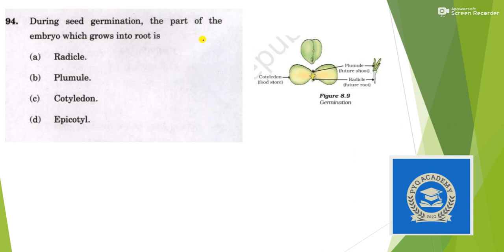Next: during seed germination, the part of the embryo which grows into a root is? The radicle grows into the future root and the plumule grows into the future shoot. The question was asking about the future root, so the answer is option A — radicle.